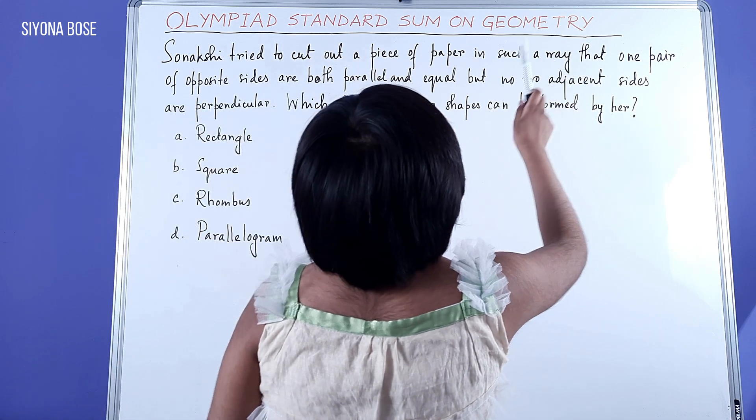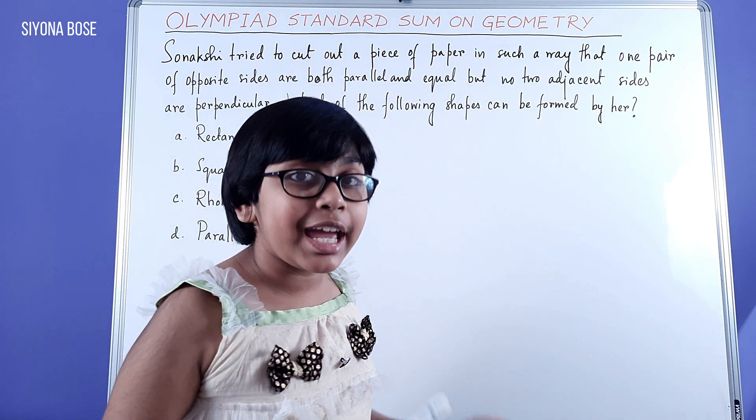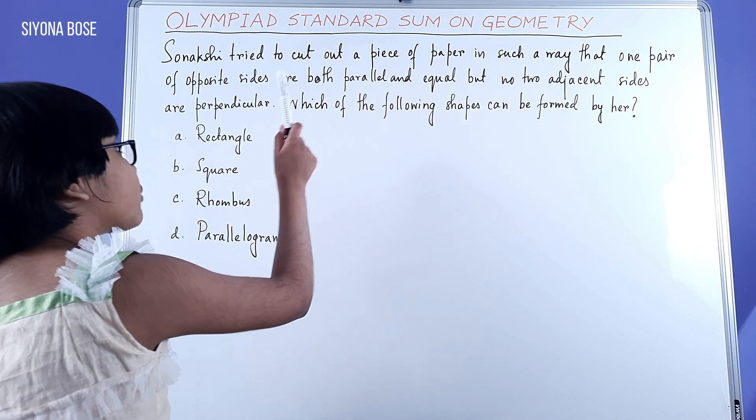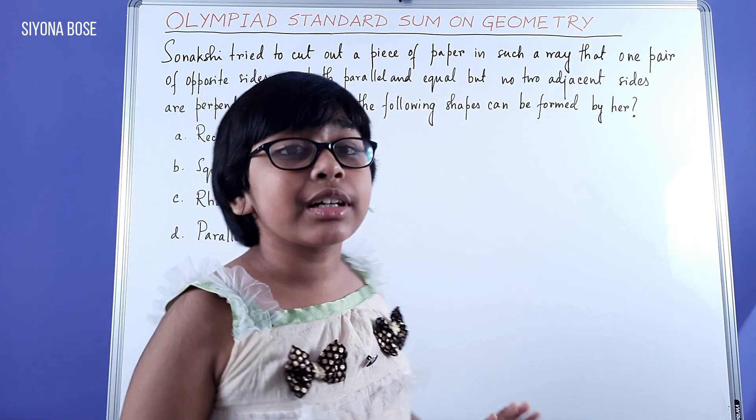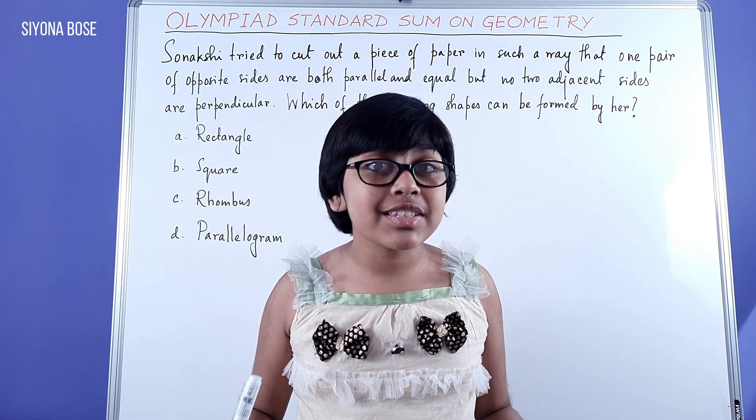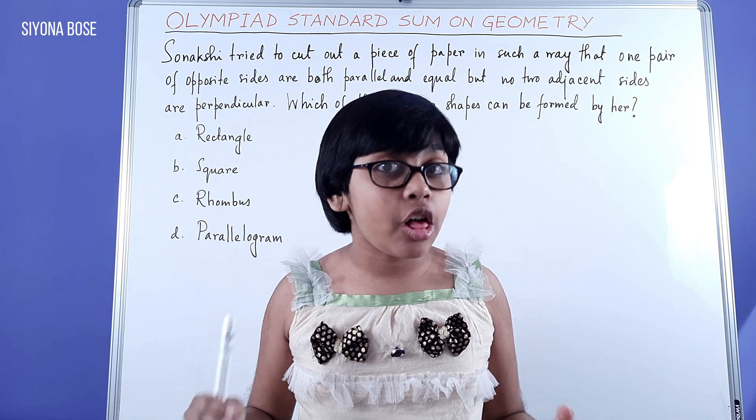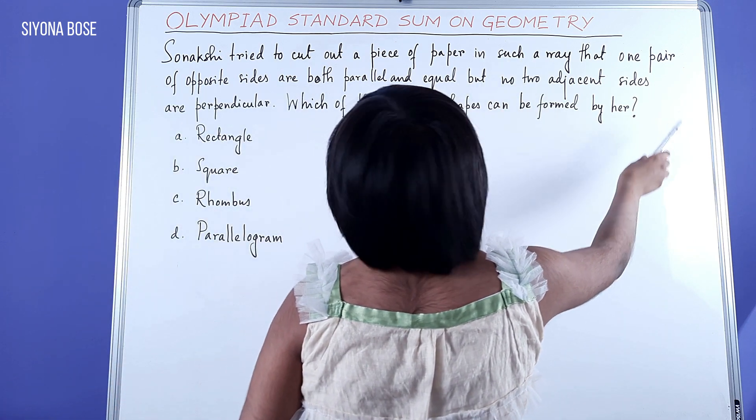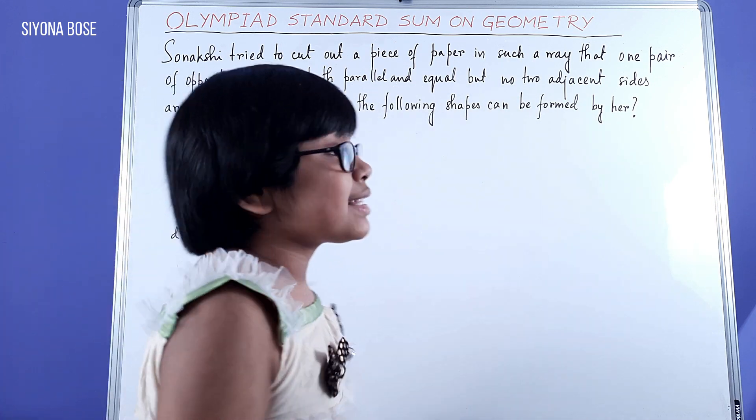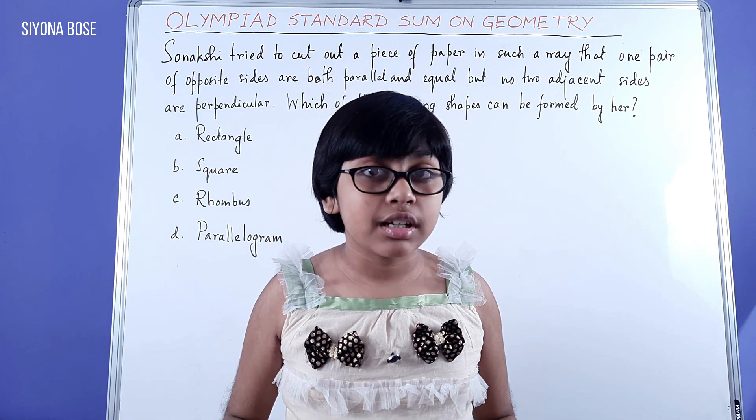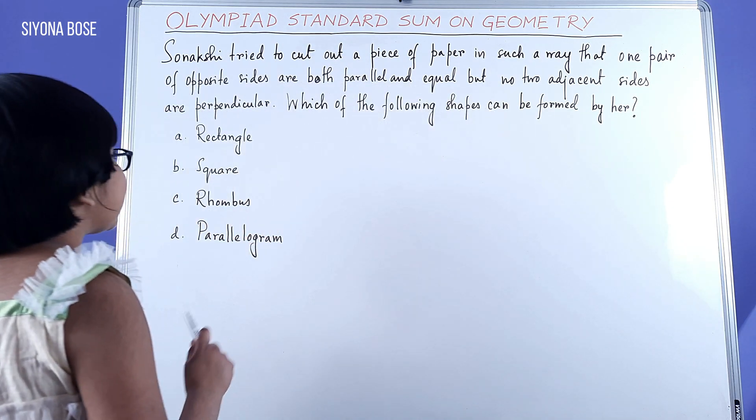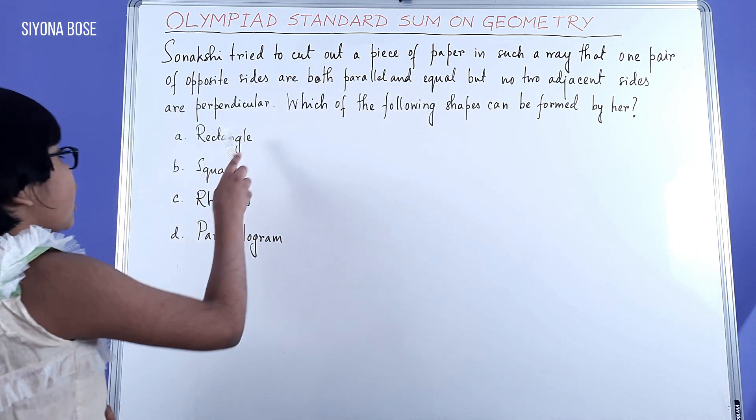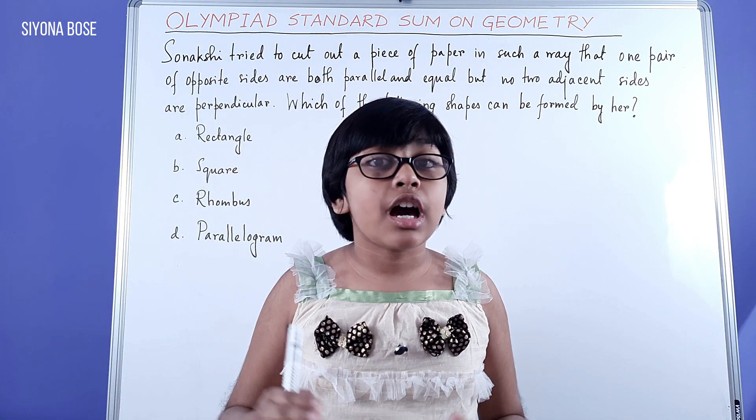It is given that she has cut the piece of paper in such a way that one pair of opposite sides are both parallel and equal. This part of the main information tells us it may be a parallelogram, but at the same time it is given that no two adjacent sides are perpendicular. That means it is not rectangular, because rectangle has right angles, but here it's telling that these adjacent sides are not perpendicular. That means it cannot be rectangular.